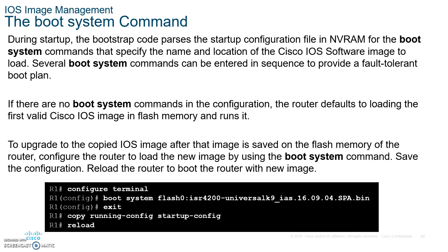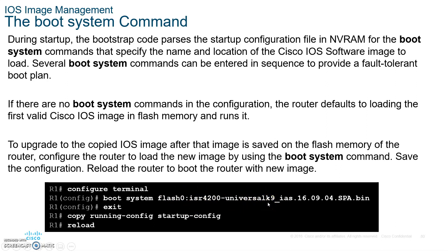We'll do that in class as a class activity. If you have an operating system saved in flash, you can use the boot command to always boot that specific system. Type boot system flash followed by the name of the operating system, then copy running-config startup-config. Your router will always boot that operating system — useful if you have more than one IOS image in flash.